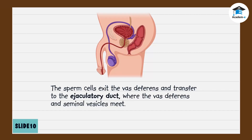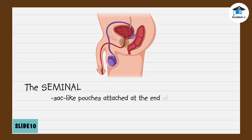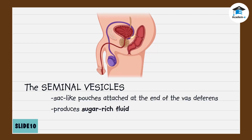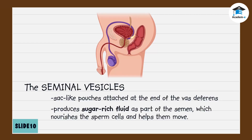The ejaculatory duct is where the vas deferens and seminal vesicles meet. The seminal vesicles are sac-like pouches attached at the end of the vas deferens. They produce sugar-rich fluid as part of the semen, which nourishes the sperm cells and helps them move.